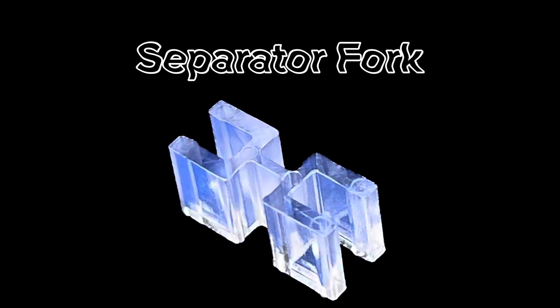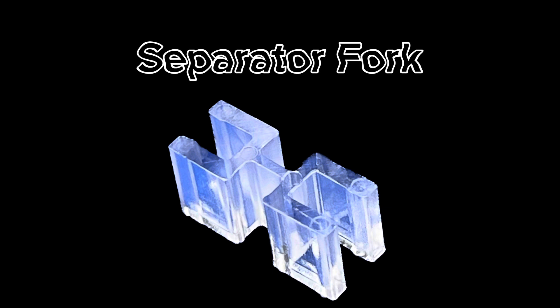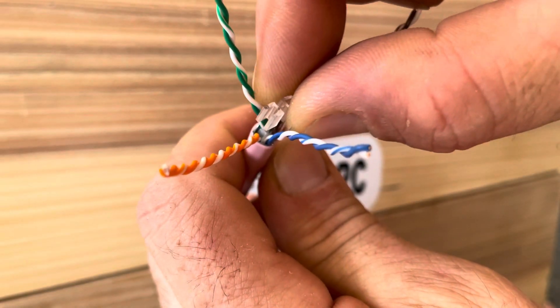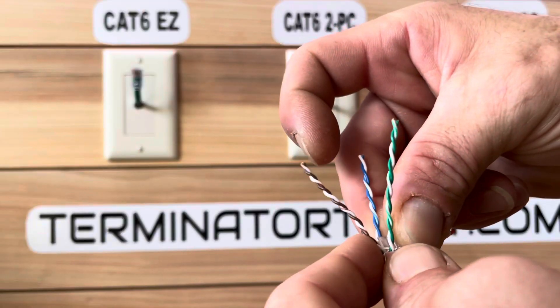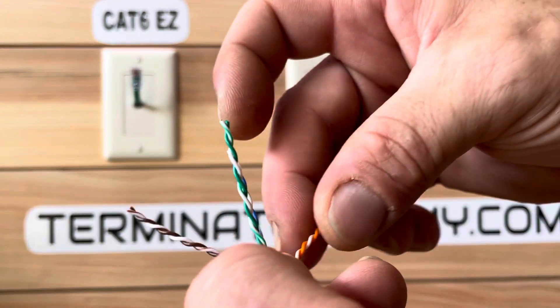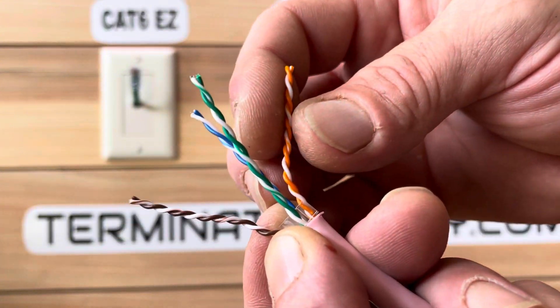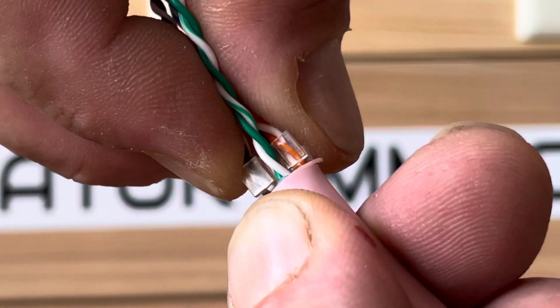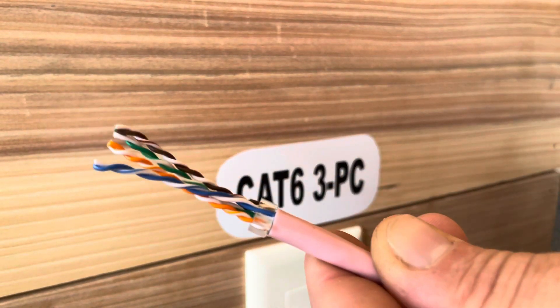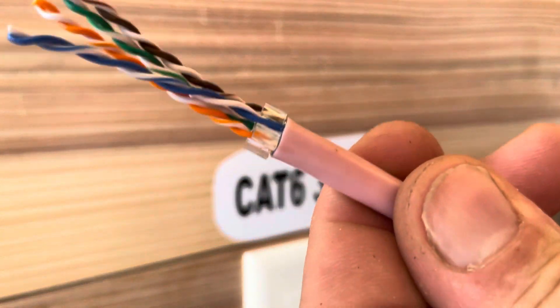Grab the first piece known as the separator fork. With the wires open, you will insert the separator fork with the orange and orange-white to one side, the brown and brown-white to the other side, and the blue and green in the center. It should look like this.